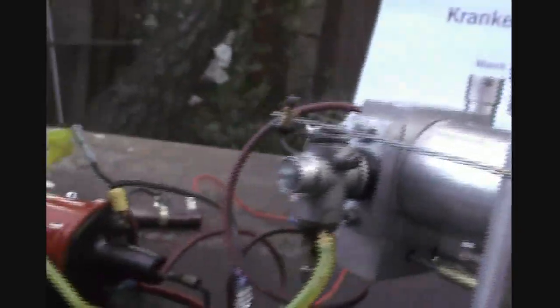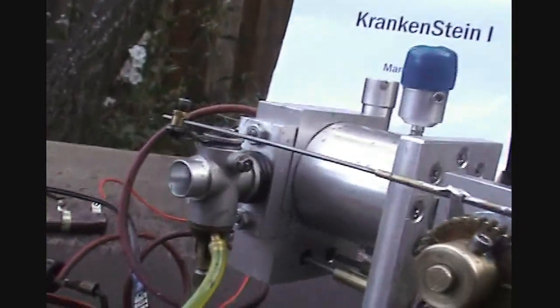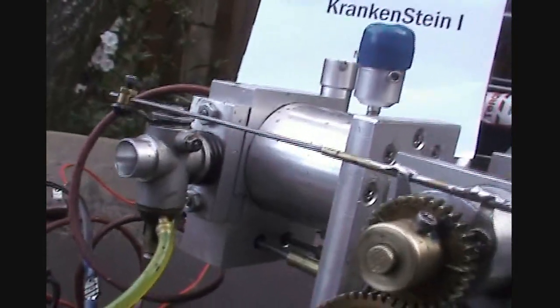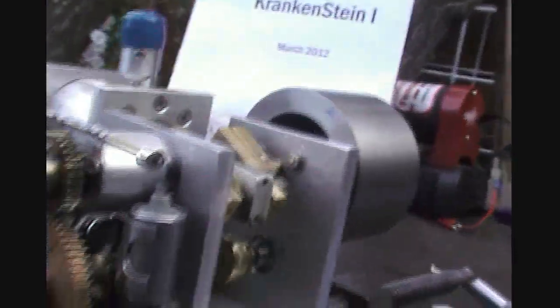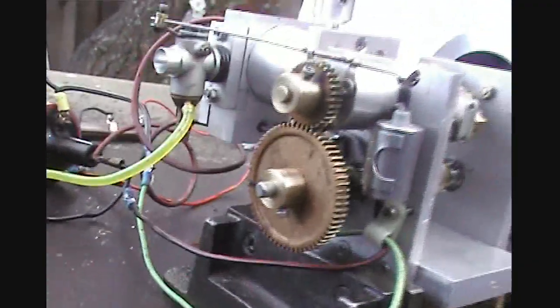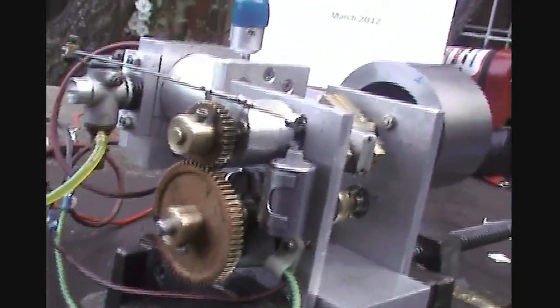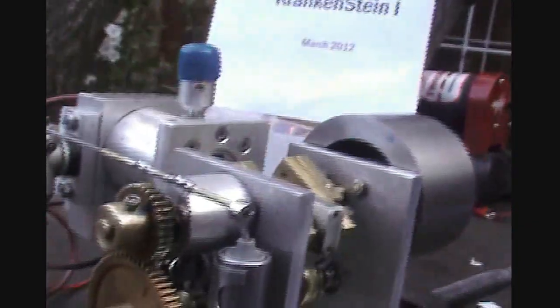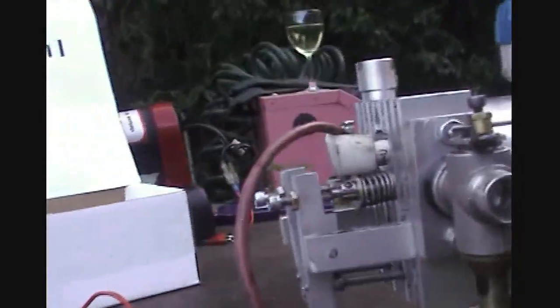Carburetor is from a 45-size model airplane engine. The gears were in the junk box - well, not junk box, in the box of goodies. So that's about it. Overhead valves, if you can get this camera on there. Cecil B would be proud.